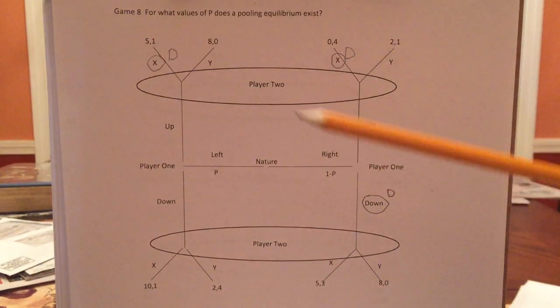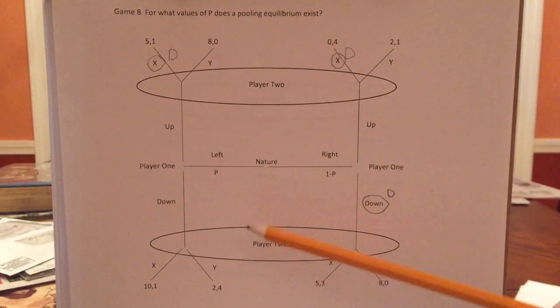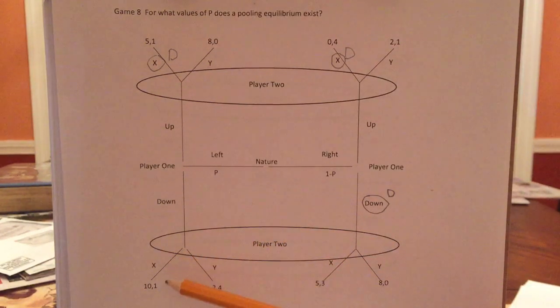Now, what if player two is told that down has been played? Well, if down has been played, player two will say, if I knew I was on the left, I would want Y. If I knew I was on the right, I would want X. So no dominant strategies.